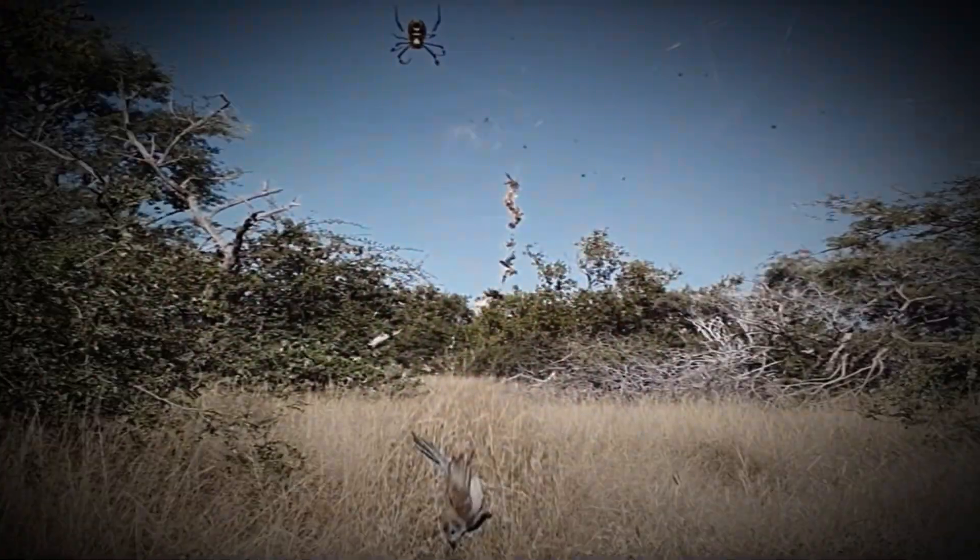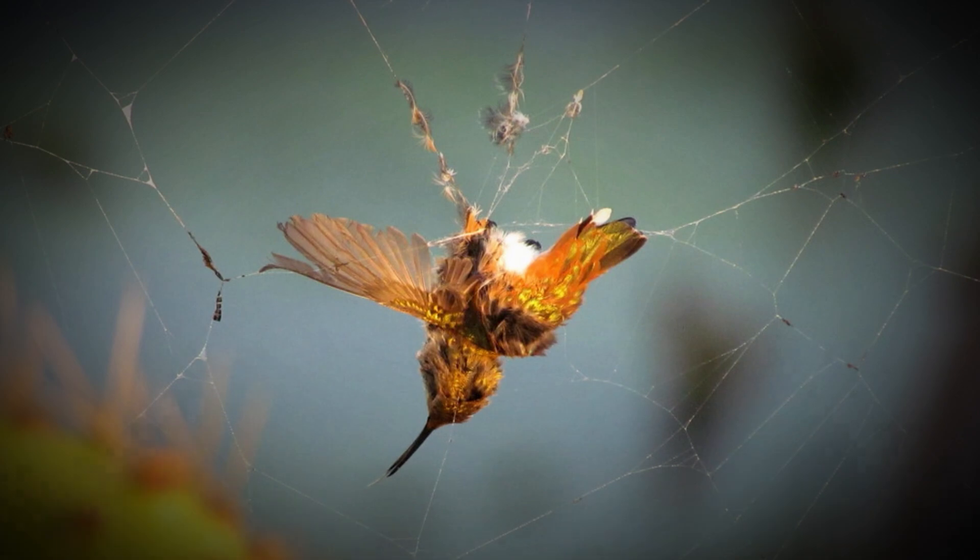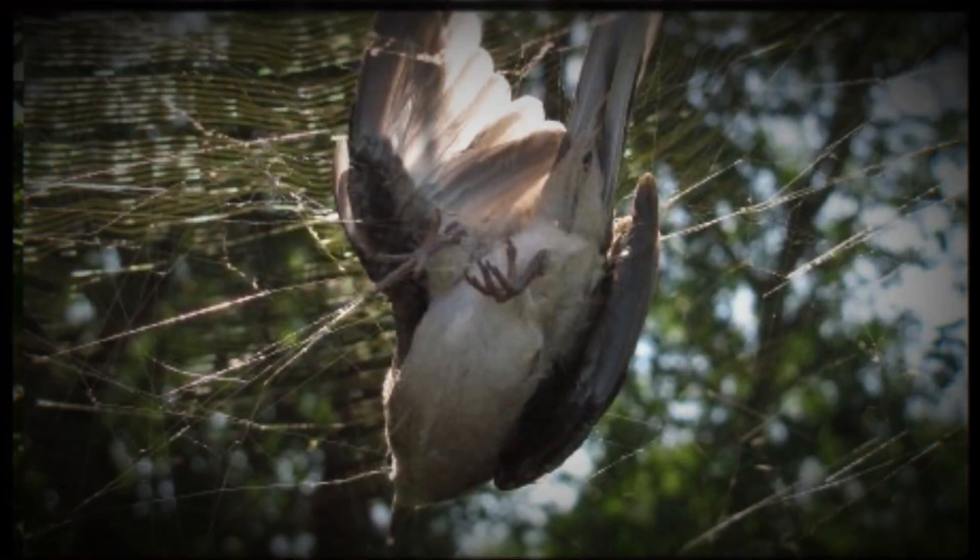Some spiders even inject their prey with venom to help break down the bird's body before consuming it. Now you might be thinking this all sounds a little bit creepy, but spiders actually play an important role in keeping ecosystems balanced. They help control insect populations and are an important food source for other animals.